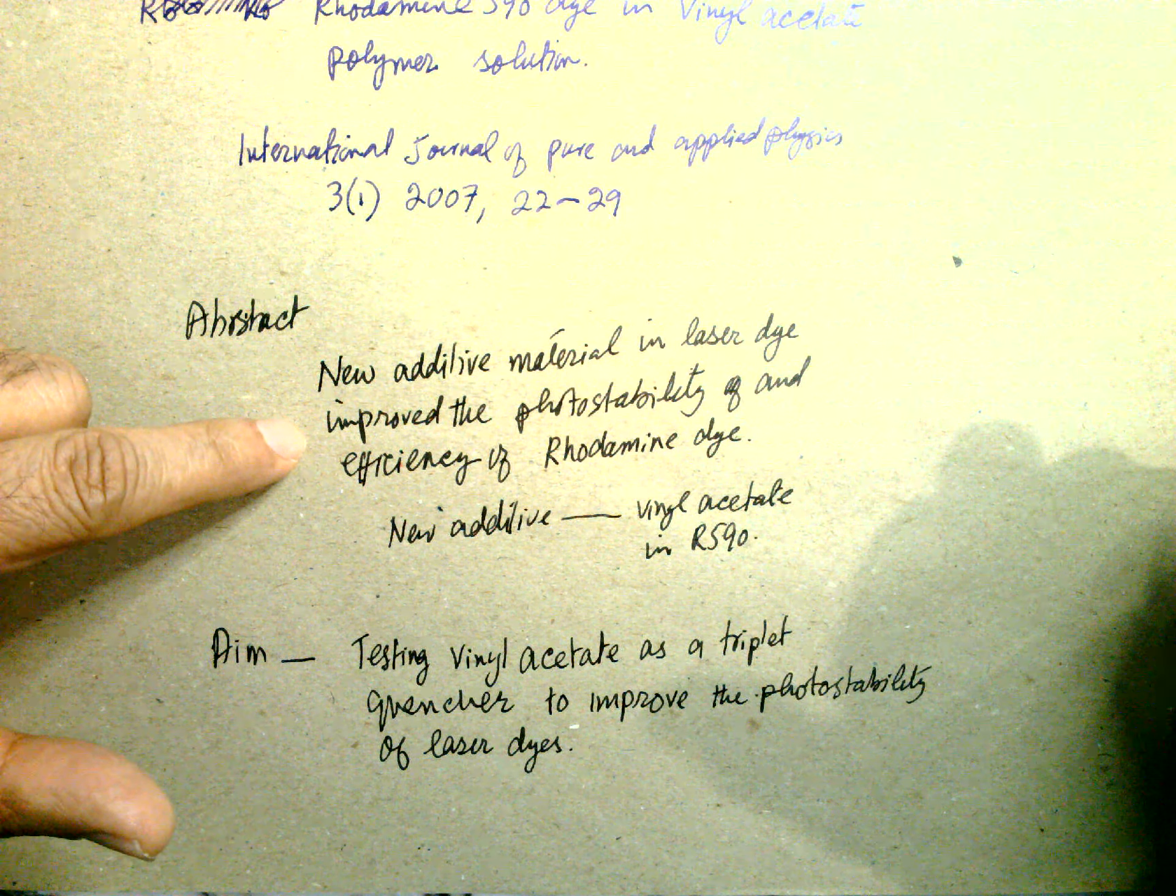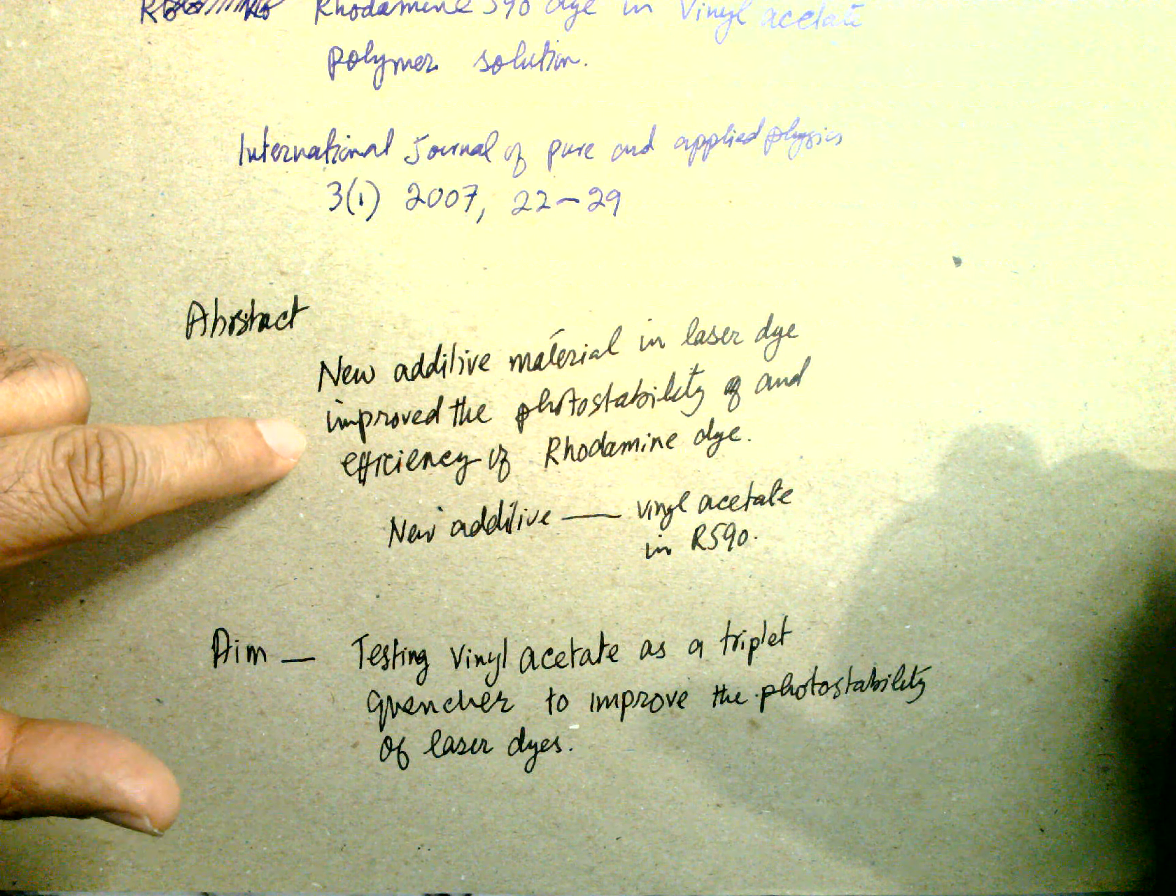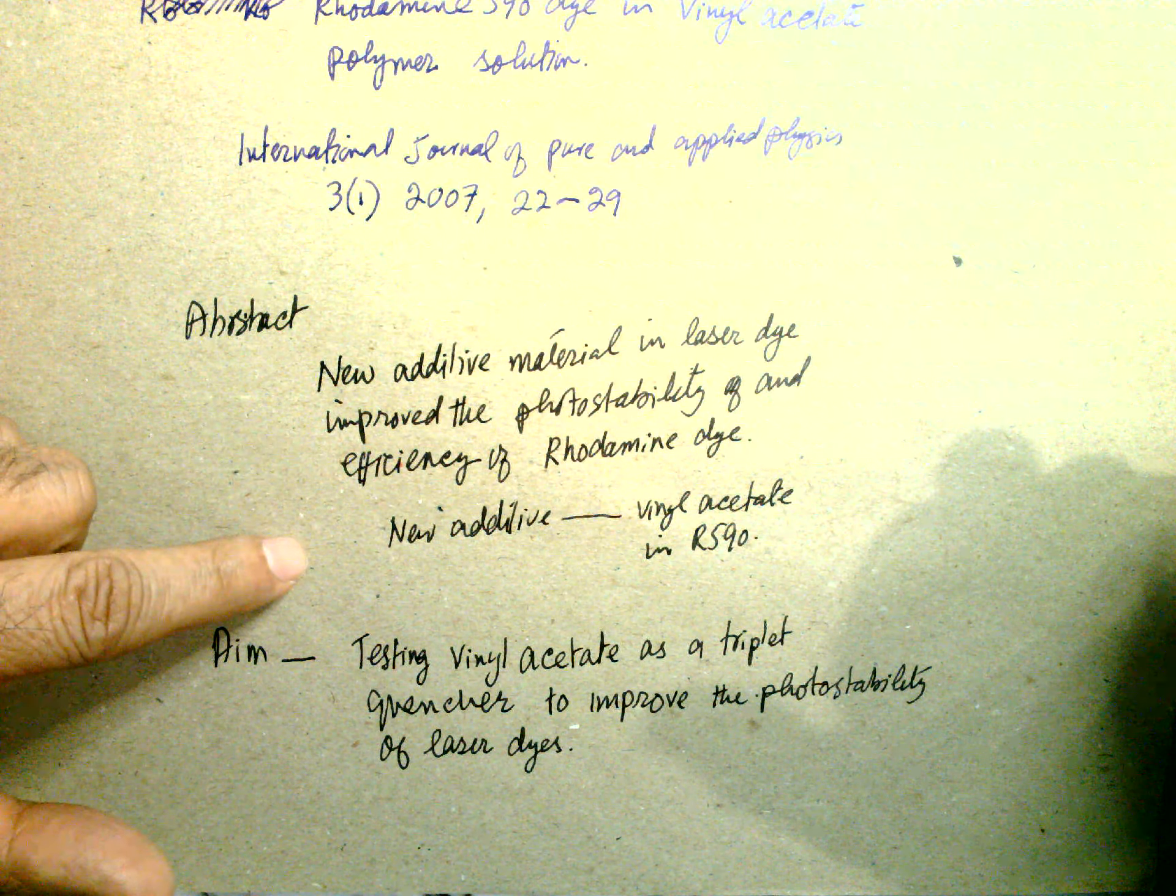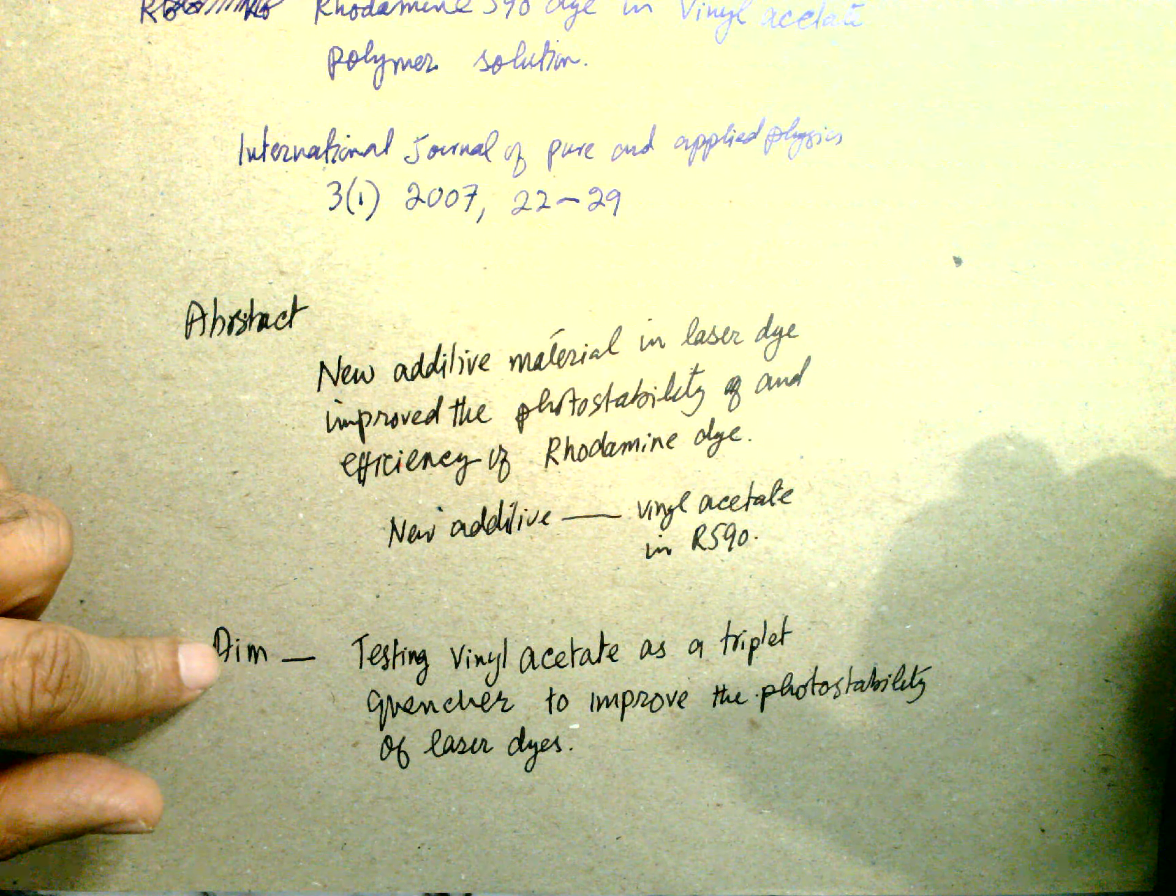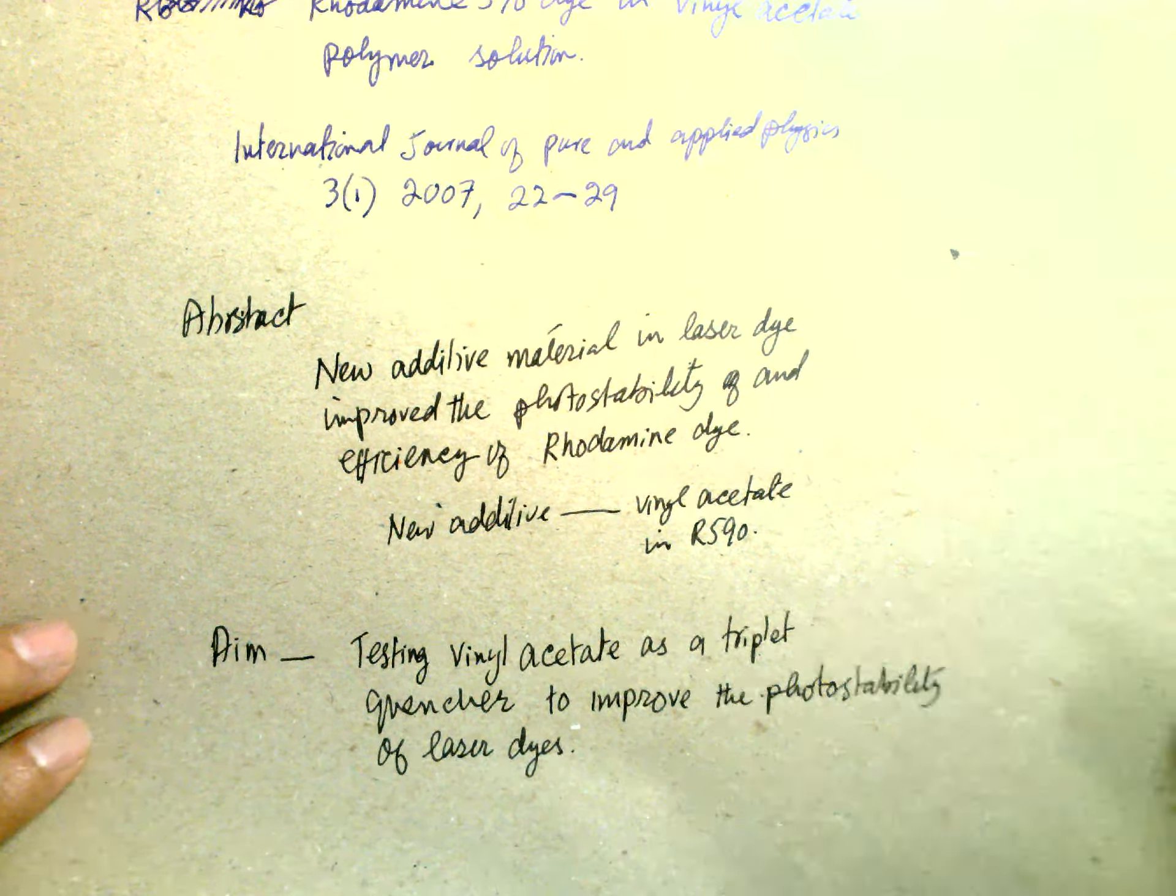The new additive is vinyl acetate, which has been used in this paper. The aim is testing vinyl acetate as a triplet quencher to improve the photostability of laser dye. So this is the aim of this paper.